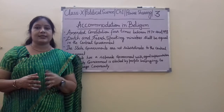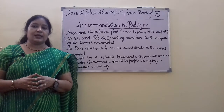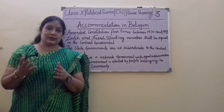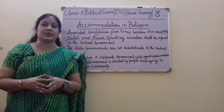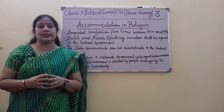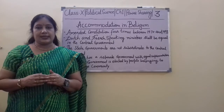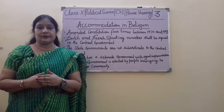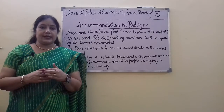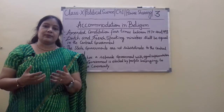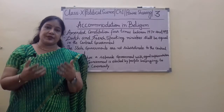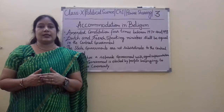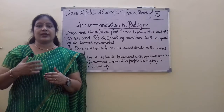Because Sri Lanka was in front of them, where they saw the civil war situations and understood. So, Belgian leaders wanted that these diverse communities would be together. To accommodate them together, to give them opportunity, to give them freedom, to stay together peacefully. They tried to adopt various measures.